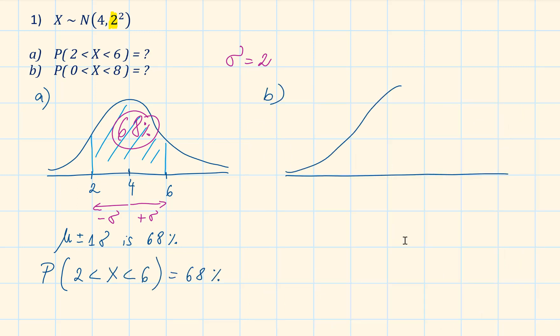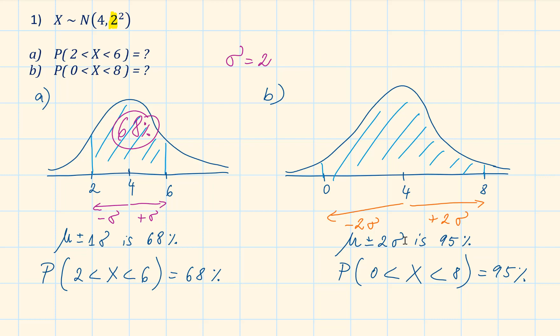For part b, find the probability that x is between 0 and 8. In this situation, we can see that 4 minus 2 standard deviations is 0 and 4 plus 2 standard deviations is 8. This represents 95%, so the probability is 95%.